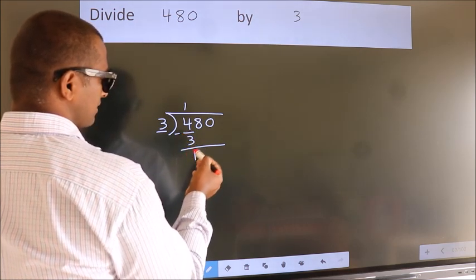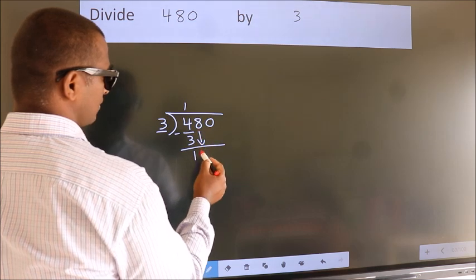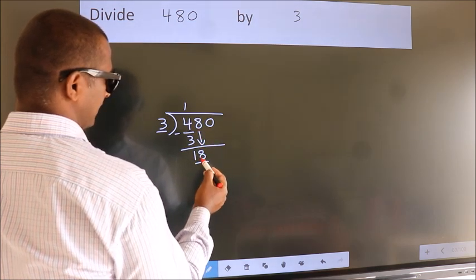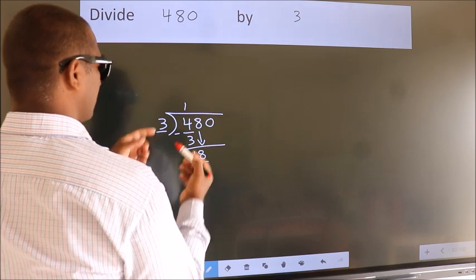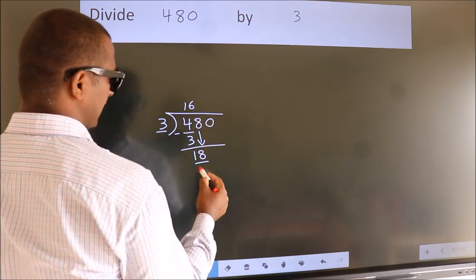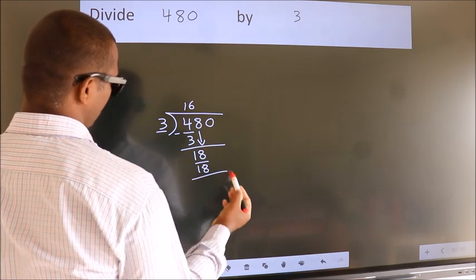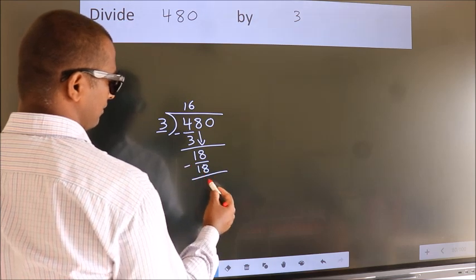After this, bring down the beside number. So 8 down, making 18. When do we get 18 in the 3 table? 3 times 6 is 18. Now we subtract and get 0.